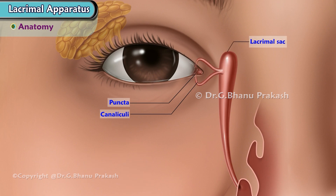Lacrimal sac lies in the lacrimal fossa. It is 15 mm in length and is guarded by the valve of Rosenmuller.